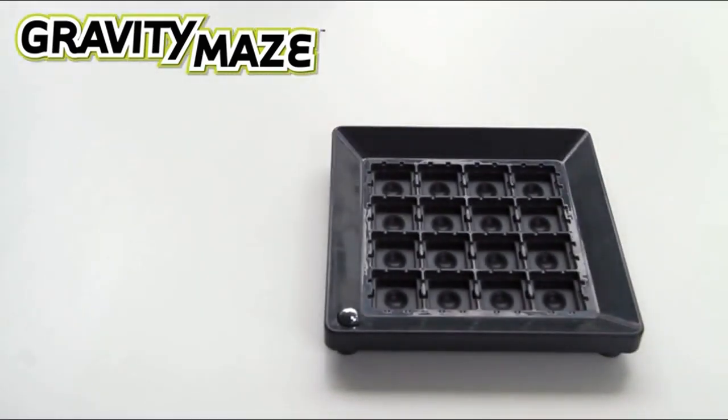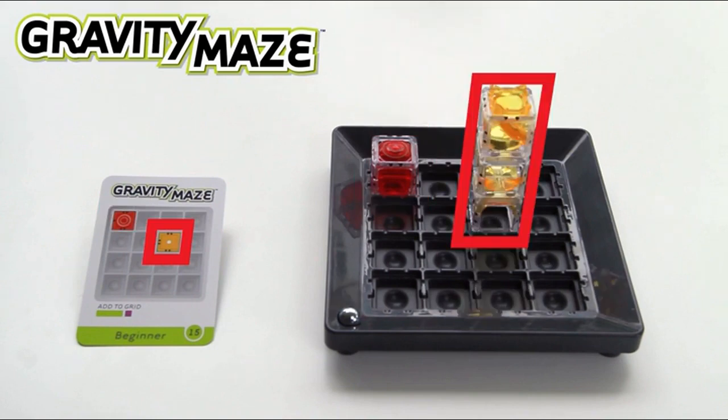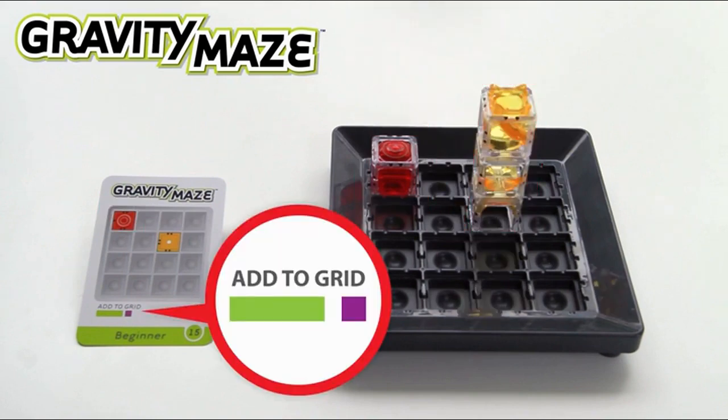Choose a challenge to begin. Your goal is to get your marble to the target tower by creating a maze using the towers shown on the card. Set up your grid as shown on the card and collect the towers indicated here under Add to Grid.